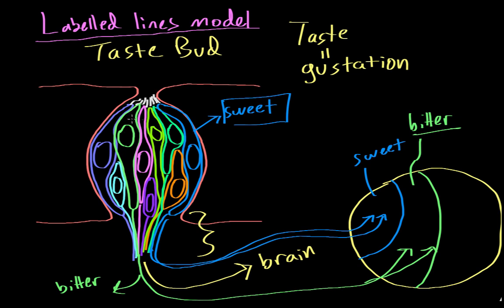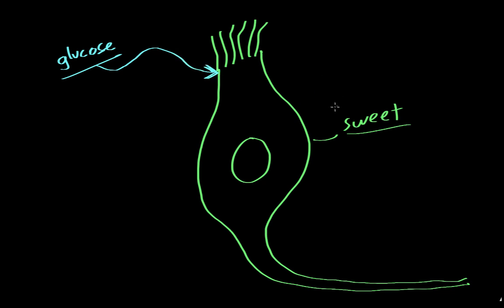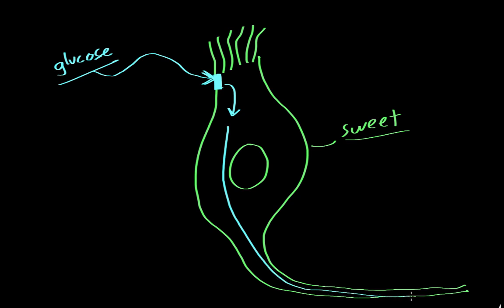Let's look at an individual taste cell. Here's the axon, the cell nucleus, and little hairs that project out into the tongue. If this is a sweet cell — sensitive to sweet molecules — and a molecule of glucose comes in, the cell has receptors in its membrane sensitive to glucose. When glucose binds, it triggers a cascade of events that causes the cell to depolarize and send an action potential down its axon into the brain.